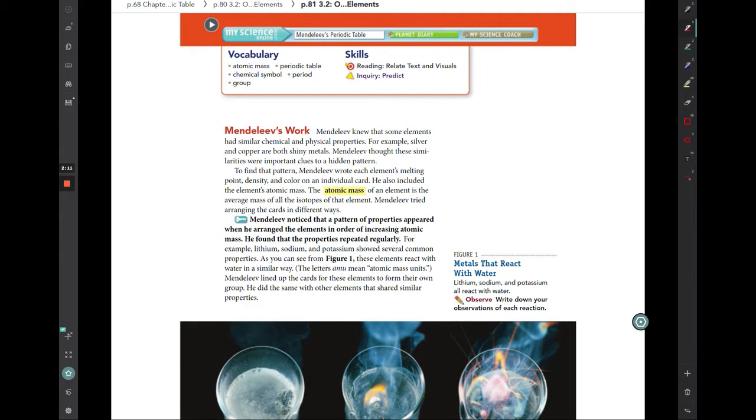He knew that some of the elements already had similar characteristics, both chemical and physical. He knew that silver and copper were both shiny metals. So he thought that these similarities were part of a hidden clue or hidden pattern as to how these elements could be arranged. And in order to find that pattern, he began to write down things like the melting point, the density, the color. And he put these on individual cards, almost like index cards, and then began to lay them out on the table by several different methods.